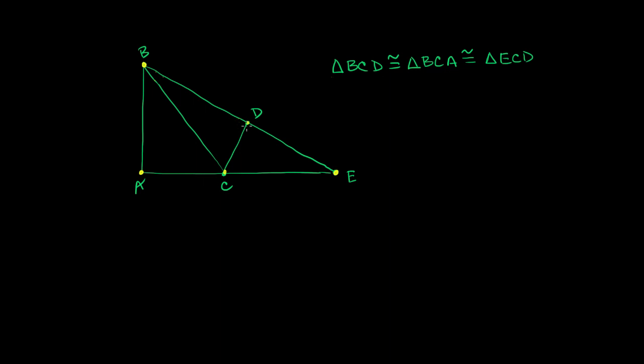And so their corresponding sides and corresponding angles will also be congruent. So just looking at the order in which they're written, vertex B corresponds in this triangle, in BCD, corresponds to vertex B in BCA. So this is the B vertex in BCA, which corresponds to the E vertex in ECD. So everything that I've done in magenta, all of these angles are congruent.